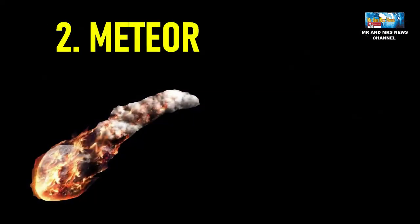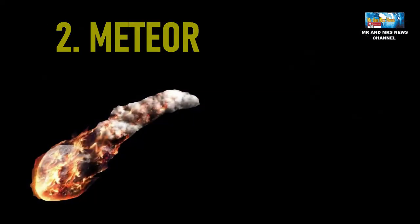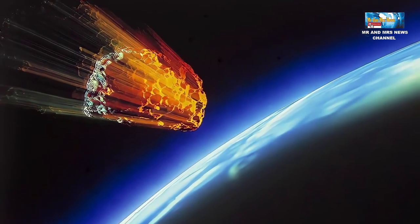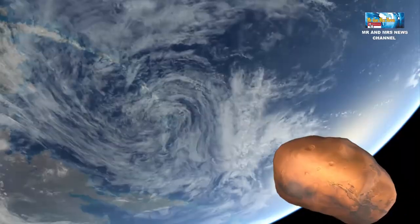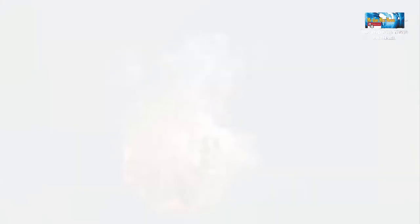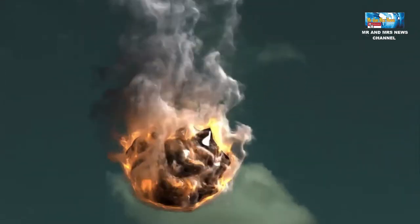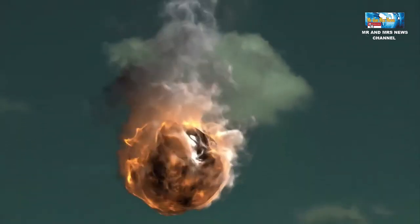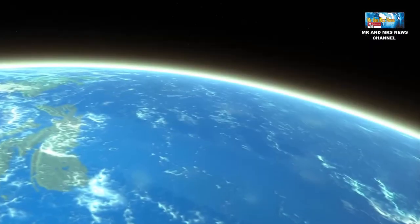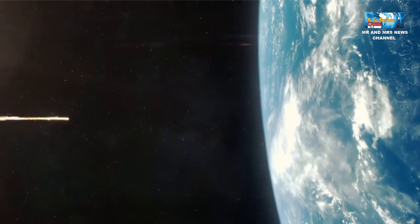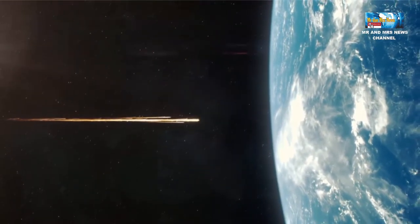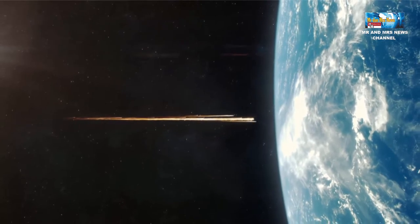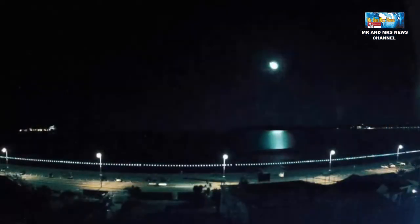Yang kedua, meteor. Meteor adalah meteoroid yang jatuh dan masuk ke dalam atmosfer bumi. Karena melayang-layang di angkasa, seringkali meteoroid ini masuk ke bumi dan berubah namanya menjadi meteor. Ketika meteor jatuh ke dalam atmosfer bumi, maka akan terjadi gesekan dengan udara sehingga benda tersebut akan menjadi panas dan terbakar. Nah, meteor terbakar ini biasa kita sebut dengan bintang jatuh.